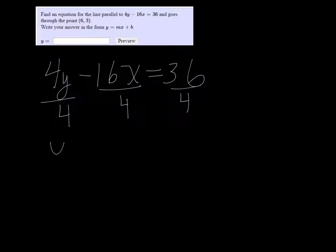So we have 4y minus 16x equals 36. One thing I notice about this is we can divide everything by 4. So we have y minus 4x equals 9.